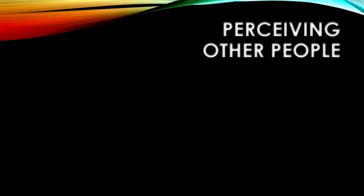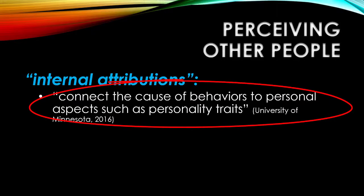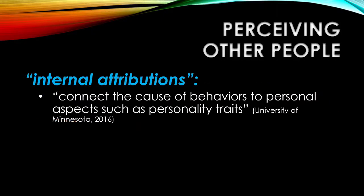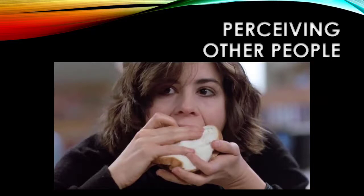First of all, we need to note that there are at least two major categories of attributions. The first is internal attributions. These are explanations that connect the cause of behaviors to personal aspects, such as personality traits. This is the kind of attribution when we explain that somebody behaved in a certain way because of the kind of person they are — their character, their internal identity, their essence or nature as a person. So for instance, you might have come up with some internal attributions regarding Allison's behavior: perhaps she's just a strange person, she is really trying to draw attention to herself, maybe she's just intrinsically odd. Those are things that have to do with her inner character and personality, her psychology, the way that you're interpreting it based on the behavior she's presenting.